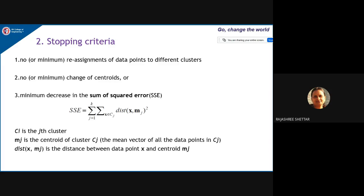Stopping criteria for K-Means: no reassignment of data points to different clusters between iterations; no change in centroid values; or minimum decrease in the sum of squared errors (SSE), computed by the SSE formula. When SSE stops decreasing significantly, the algorithm converges and stops.